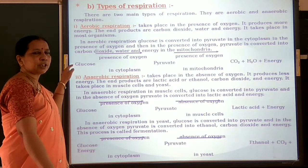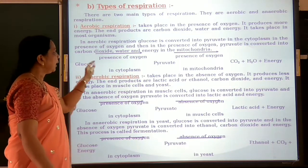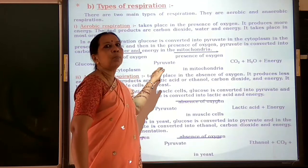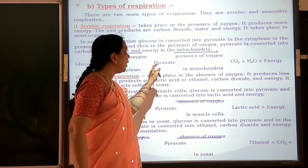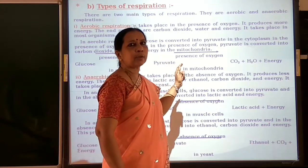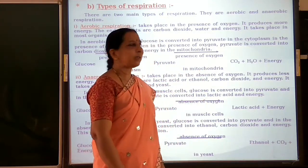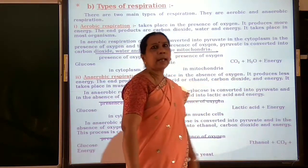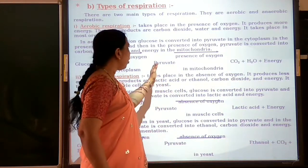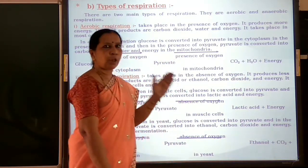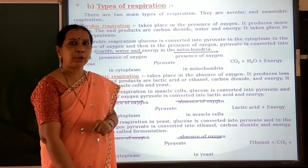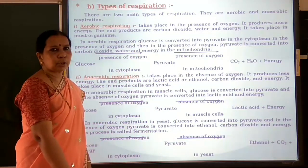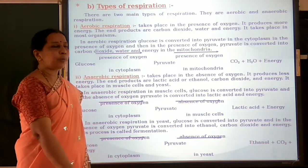This is the chemical equation for aerobic respiration: glucose, which is food in its simplest form, is converted into pyruvate in the cytoplasm in the presence of oxygen. Then this pyruvate gets converted in mitochondria — in the presence of oxygen — into carbon dioxide, water and energy. So this process of conversion of pyruvate into carbon dioxide, water and energy takes place in mitochondria in the presence of oxygen.